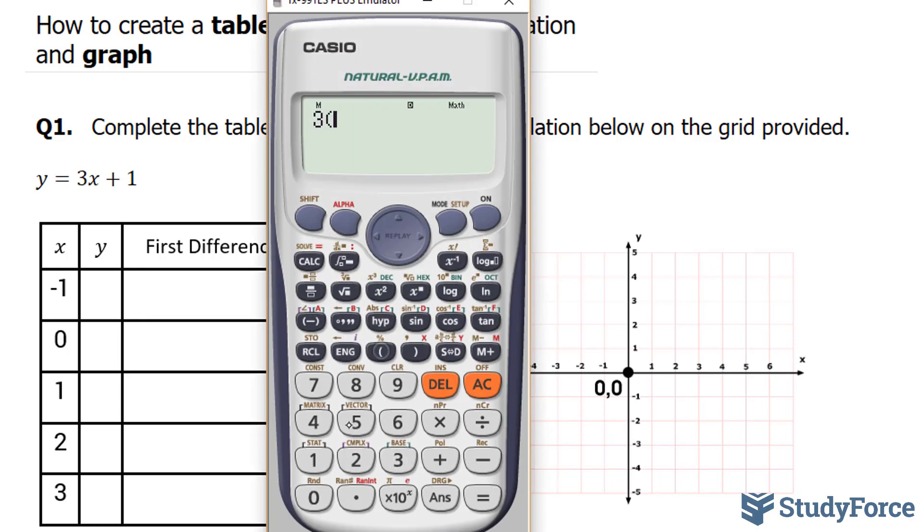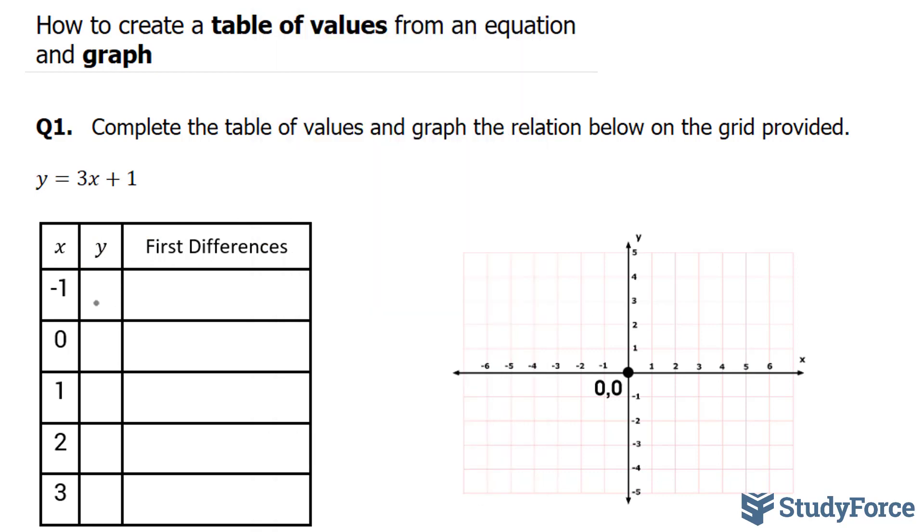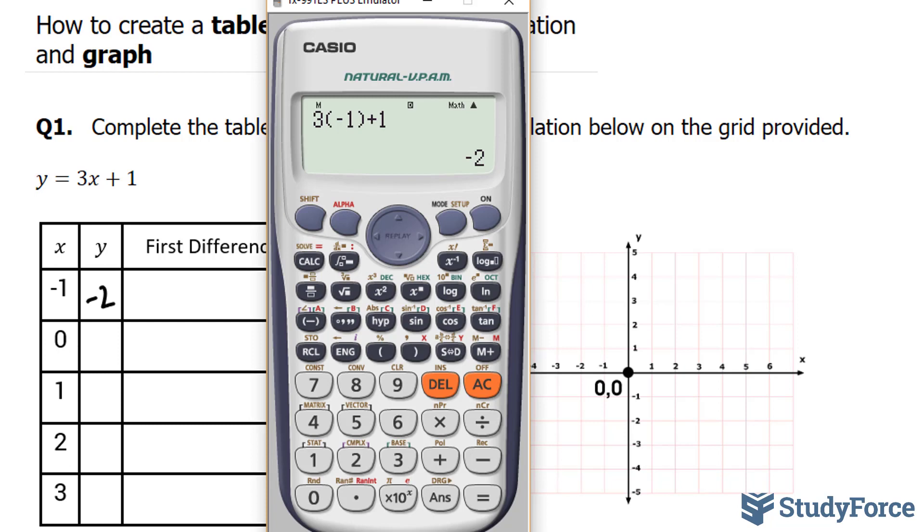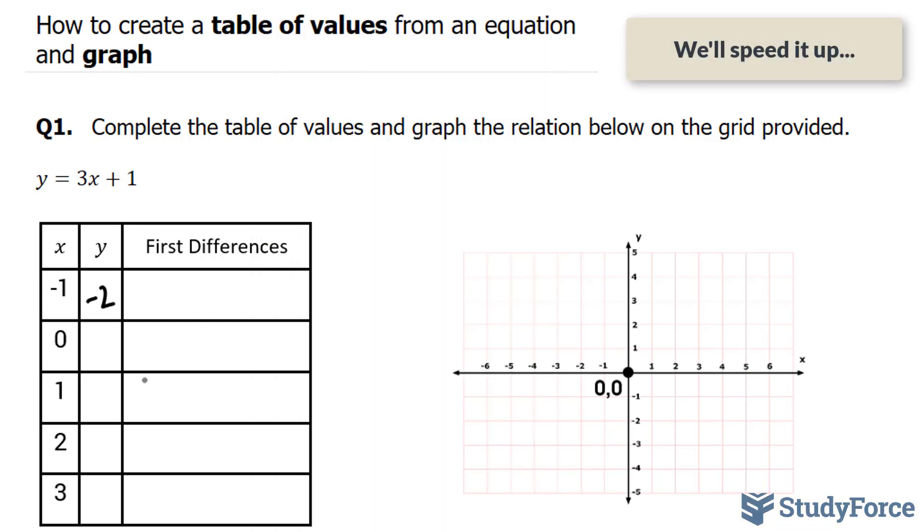So we have 3 times negative 1 plus 1, and this gives us minus 2. Now we'll do the same thing for all inputs. 3 times 0 gives us positive 1.